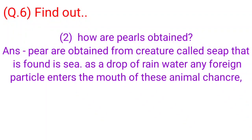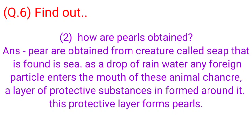2. How are pearls obtained? Answer. Pearls are obtained from a creature called an oyster that is found in the sea. As a drop of rainwater or any foreign particle enters the mouth of this animal, a layer of protective substance is formed around it. This protective layer forms pearls.